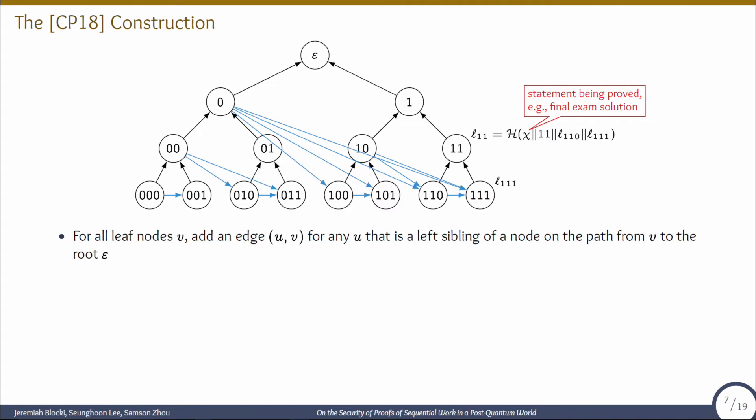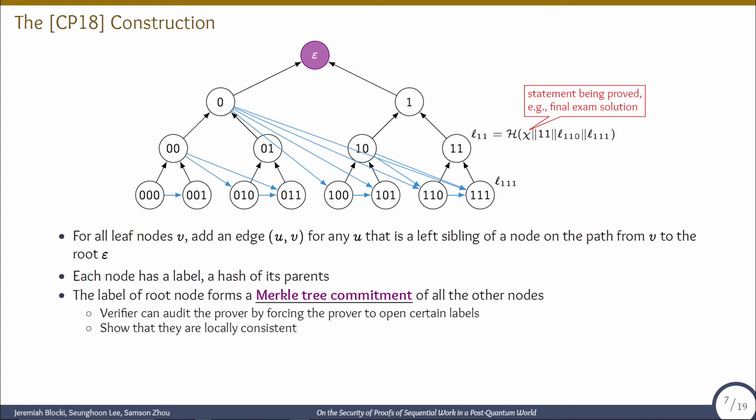Let me briefly recall Cohen and Peterczak's construction of a proof of sequential work. It is basically a complete binary tree with some extra edges added, highlighted in blue. For each leaf node V, we add an edge from U to V for any U that is a left sibling of a node on the path from V to the root epsilon. For example, for node 111, we add edges from 110, from 10, and from 0 to 111. Each node has a label which is a hash of its parents, including the message chi and the node itself. The verifying process is done by checking the Merkle tree commitment, which is the label of the root node highlighted in purple.